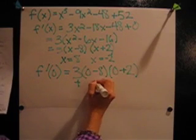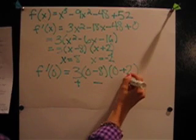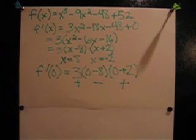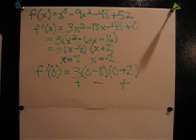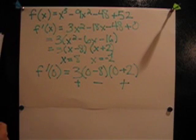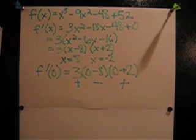3 is positive, negative 8, negative 2 is positive. The whole thing is negative. Since the first derivative is negative, it is decreasing at x equals 0. We can also say that it is decreasing in the whole interval of negative 2 to 8.